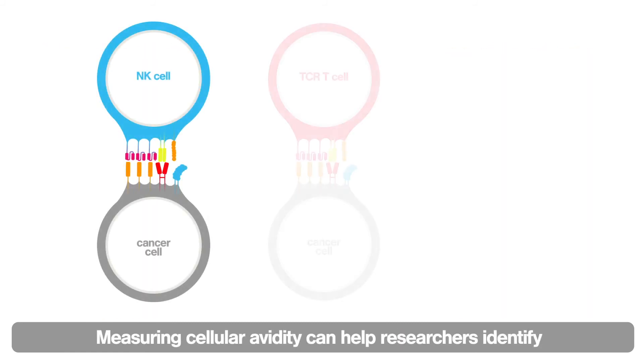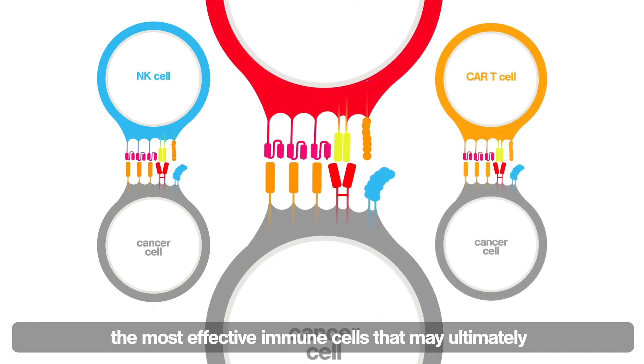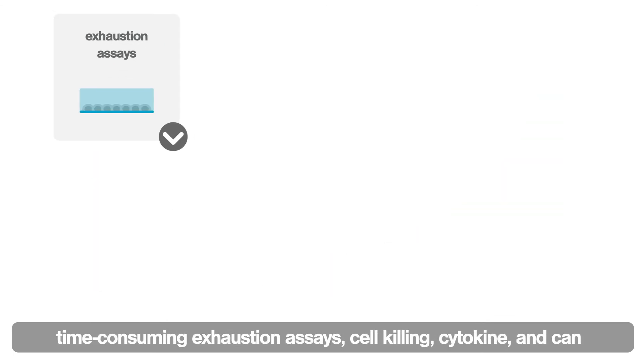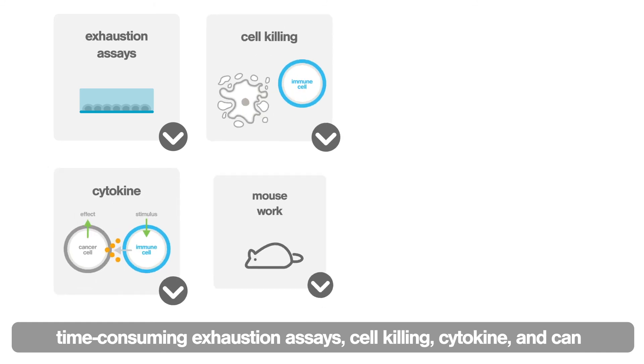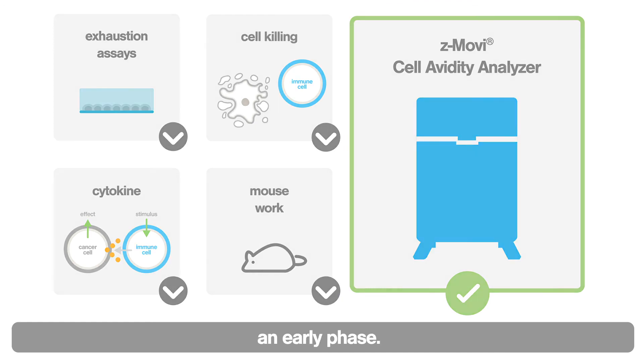Measuring cellular avidity can help researchers identify the most effective immune cells that may ultimately improve clinical success in cancer therapy. Not only that, but these measurements can replace time-consuming exhaustion assays, cell killing, cytokine, and can reduce mouse work by selecting outcome-predictive candidates at an early phase.